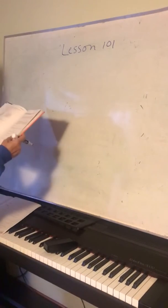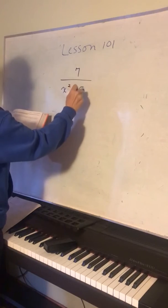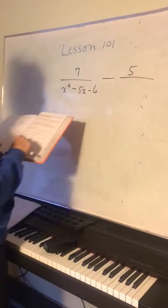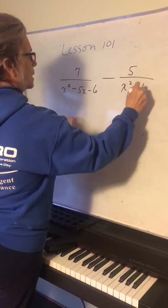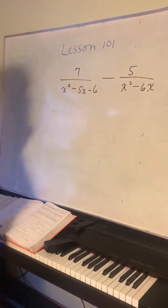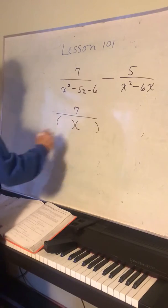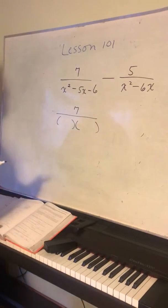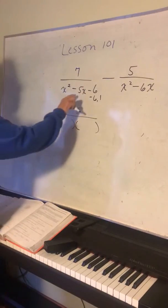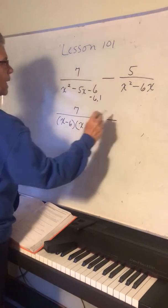The next problem is 7 over x squared minus 5x minus 6, minus 5 over x squared minus 6x. You have to factor both denominators into their simplest forms. For the first one, we need factors that multiply to negative 6 and add to negative 5 — that's negative 6 and positive 1 — giving us x minus 6 times x plus 1.